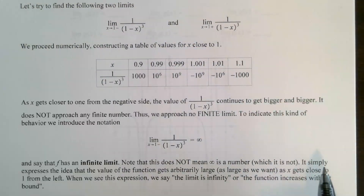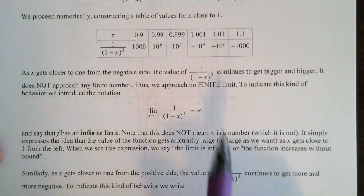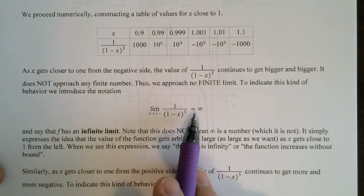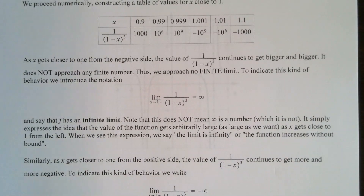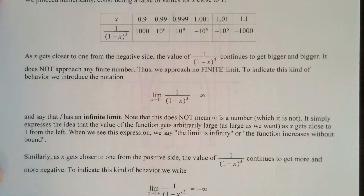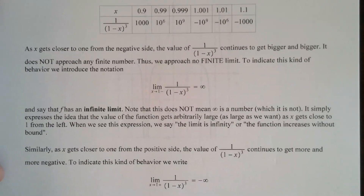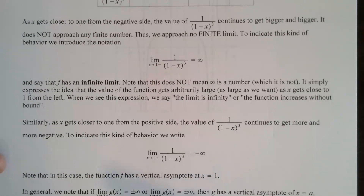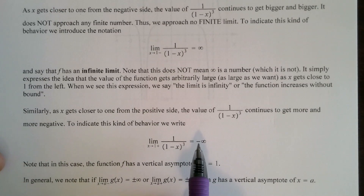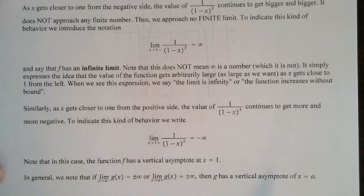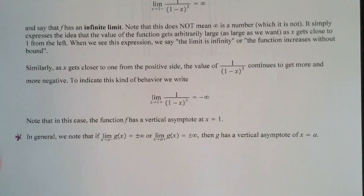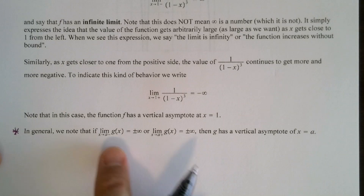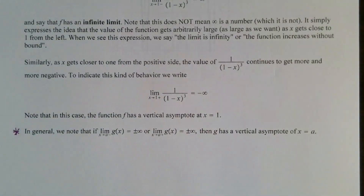The way we describe this behavior — we call these infinite limits. To indicate this behavior, we write: the limit as x approaches 1 from the negative side is infinity, meaning f has an infinite limit. This does not mean infinity is a number — it simply expresses the idea that the value of the function becomes arbitrarily large as x gets close to 1 from the left. From the positive side, the limit goes to minus infinity. This gives us a general definition: if the limit as x approaches a from either side is plus or minus infinity, then g has a vertical asymptote at x equal a.